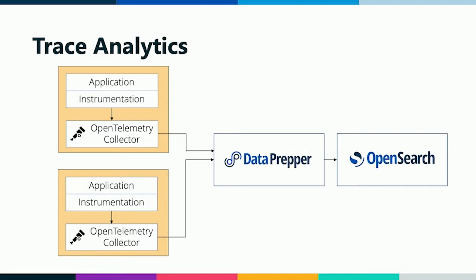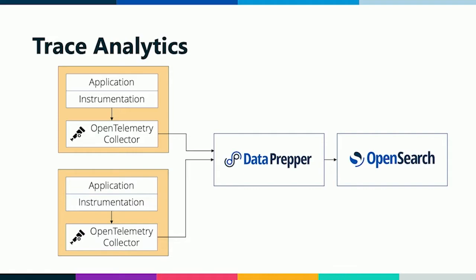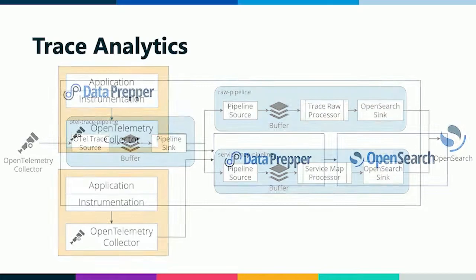This is our reference architecture for using Data Prepper for trace use cases. We view Data Prepper as a last mile collector, sitting right in front of your OpenSearch cluster. Instead of sending your trace and span data directly to OpenSearch, we recommend sending it to Data Prepper. To do this, you'll need to instrument your application with tooling that works with the OpenTelemetry standard. You'll run the OpenTelemetry collector as a sidecar — right next to your application or as a sidecar container — and configure it to send data to Data Prepper.